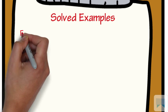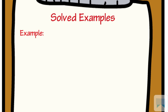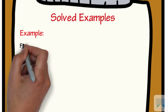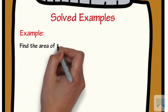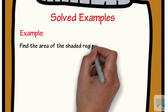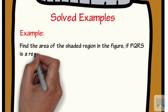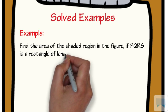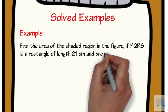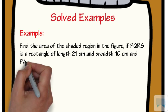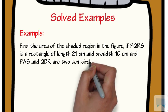Let's do some examples on area of combination of plane figures. Find the area of the shaded region in the figure if PQRS is a rectangle of length 21 cm and breadth 10 cm, and PAS and QBR are two semicircles.